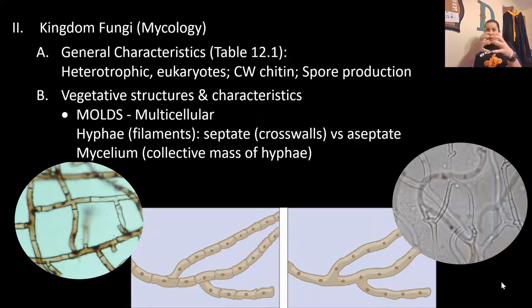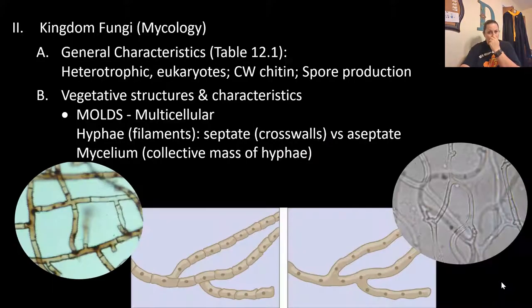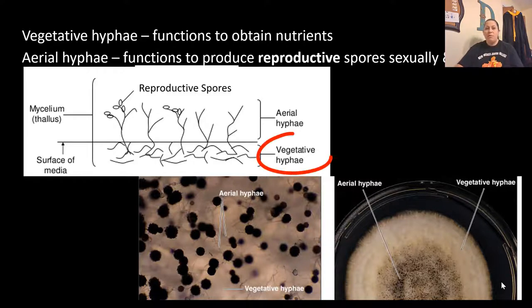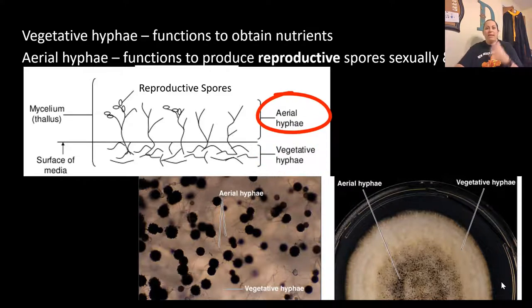Mycelium is when a group of hyphae are put together — collectively a bunch of hyphae would be called mycelium. Vegetative hyphae function to obtain nutrients by absorbing them. Aerial hyphae function more for reproduction — they create spores. Fungi can create spores either sexually or asexually. Vegetative hyphae are normally under the soil or in the media absorbing nutrients, while aerial hyphae are in the air releasing spores so the fungus can spread.